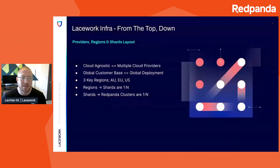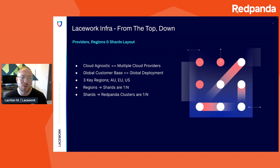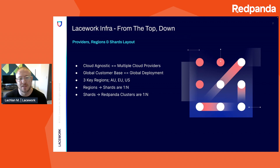I'm going to talk a little bit more about those virtual topics in just a moment, but I want to start by sharing a little bit about our Lacework infrastructure for context. As Guru mentioned earlier, we want to be cloud agnostic, so that means we're in multiple cloud providers. We have a global customer base, which means we need a global deployment, and we're currently in three key regions: AU, EU, and US. Each of these regions has multiple shards, and each of these shards has multiple Red Panda clusters.